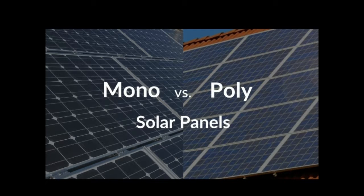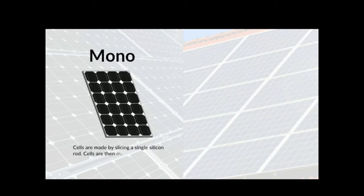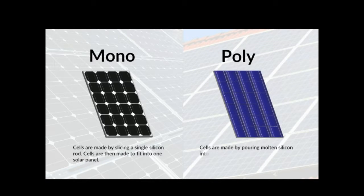There are several differences between mono and poly solar panels. Mono solar panels are made from a single silicon cell, while poly panels are made from melting down multiple cells.